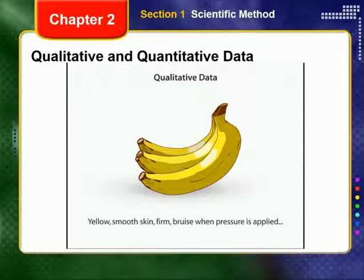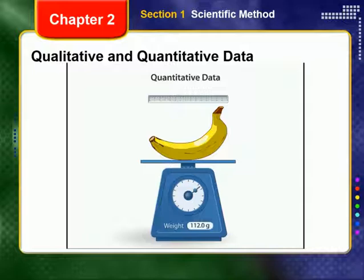Quantitative data measures properties. For example, this banana is 16 centimeters long and has a mass of 112 grams. Both of these pieces of data are objective. If another person repeated the measurement with the same banana, the results should be the same.